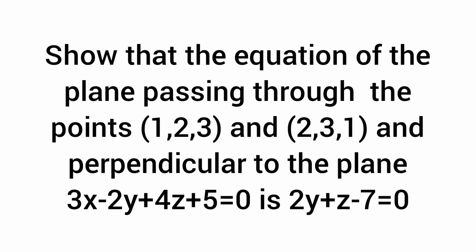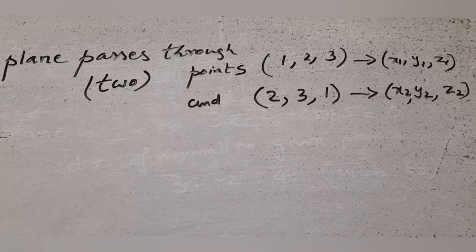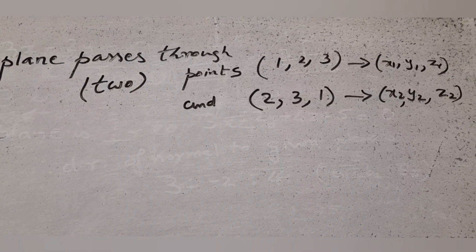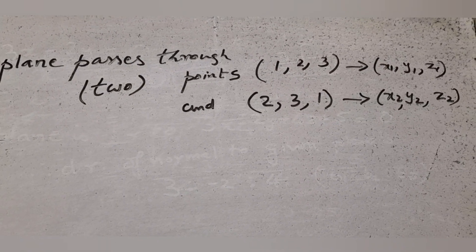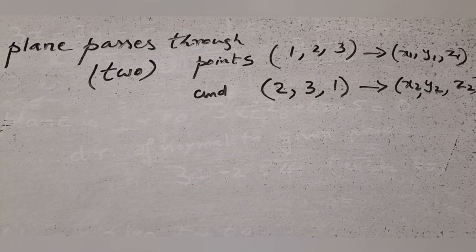The required plane passes through two points: (1, 2, 3) and (2, 3, 1). Take those points as (x1, y1, z1) and (x2, y2, z2).